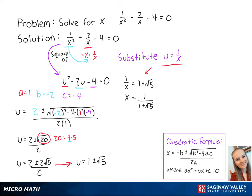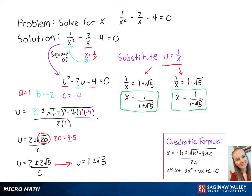Now we plug in u equals 1 minus the square root of 5. So we get 1 over x equals 1 minus the square root of 5, which becomes x equals 1 over 1 minus the square root of 5. So x equals 1 over 1 plus the square root of 5, and x equals 1 over 1 minus the square root of 5 are the final answers.